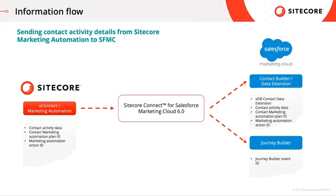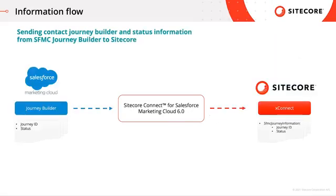It also sends the journey builder event ID into the journey builder of Salesforce Marketing Cloud. When sending contact journey builder and status information from Salesforce Marketing Cloud journey builder to Sitecore, the connector takes the journey ID and the journey builder plan ID from Marketing Cloud, and the status in which the customer is within the journey builder, and sends it into Sitecore XConnect under the facet SFMC journey information, where it stores the journey ID and the status of the customer contact.